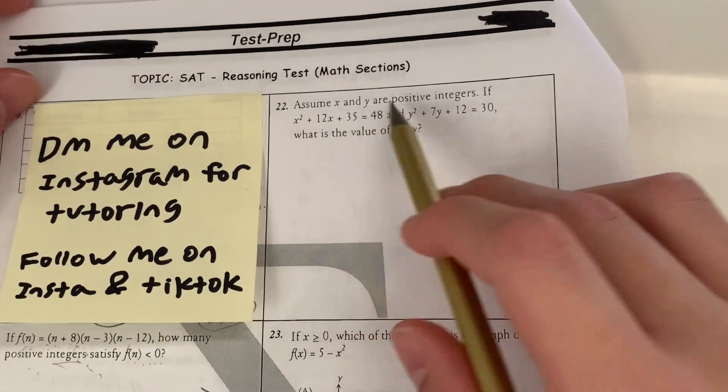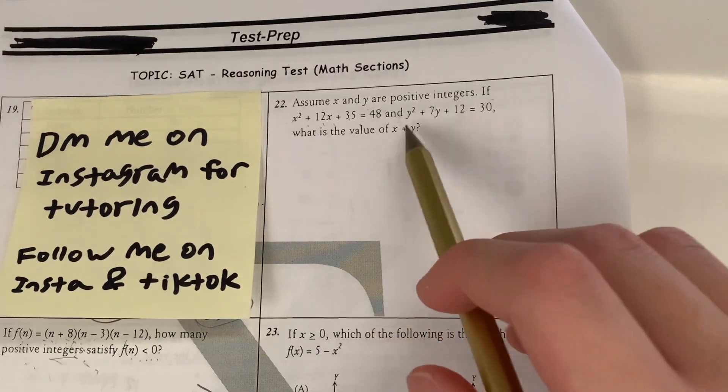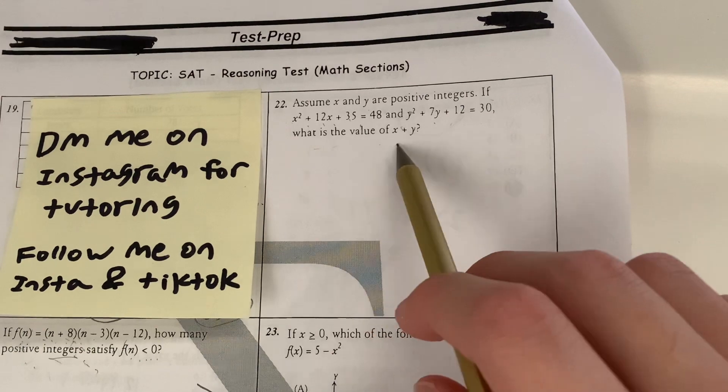In this video, I'm going to teach you two questions you absolutely need to know before you take the SAT. So question 22: Assume x and y are positive integers. If x² + 12x + 35 = 48, and y² + 7y + 12 = 30, what is the value of x + y?